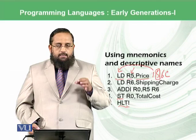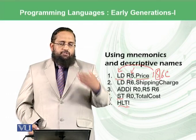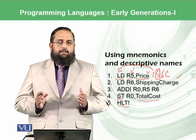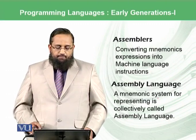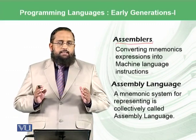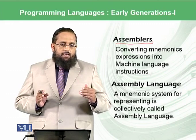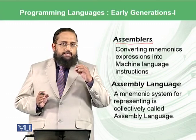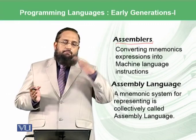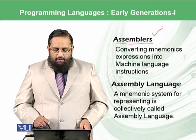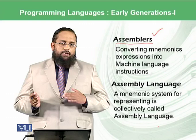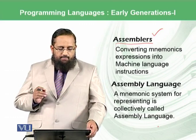So LD, ADD, ST, and HALT — these are the mnemonics or symbols that were being used in the next generations. And price, shipping charge, total cost — these are basically the descriptors or the variables. Converting mnemonic expressions into machine language instructions was done using assemblers. Since all communication with the machine takes place using machine language, we need a program that will convert these mnemonics and descriptive names into machine instructions — and this is called the assembler. A mnemonic system for representing instructions is collectively called assembly language. So this means we shifted from machine language to assembly language where we could use mnemonics and descriptive names.